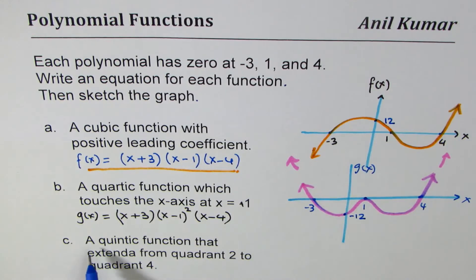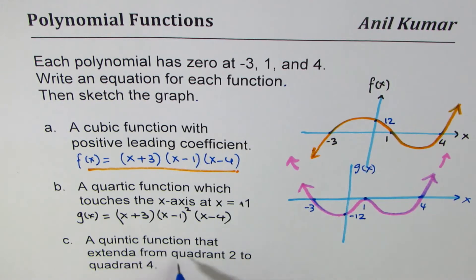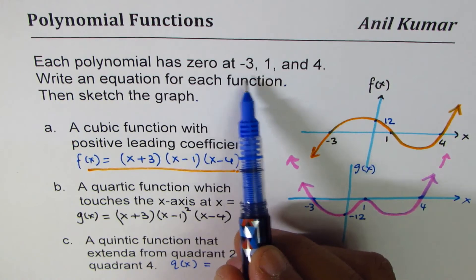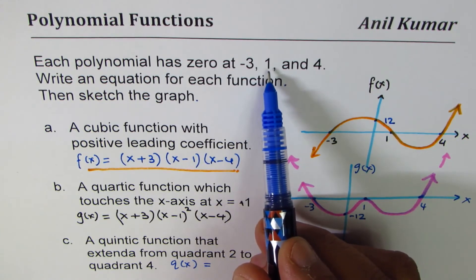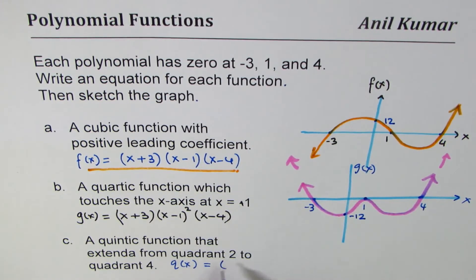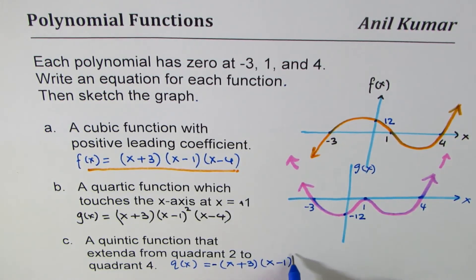The next one is a quintic — that means degree 5 — extending from quadrant 2 to quadrant 4. Quadrant 2 to 4 means a negative leading coefficient. So let me write this function as q of x. Since we need degree 5, two of these zeros could be degree 2 or we could make one of them cubic. There are many possibilities. I'll write a negative sign since we are moving from quadrant 2 to 4. We write: negative times x plus 3, times x minus 1 cubed, times x minus 4.